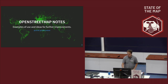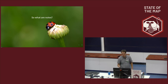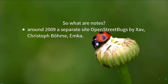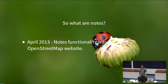I'll start with a brief history of notes. What are notes? Originally, around 2009 — the OpenStreetMap wiki isn't very specific on it — there was a separate site called OpenStreetMap Bugs that provided a very simple way of recording issues. In April 2013, the notes functionality was added into the OpenStreetMap website.